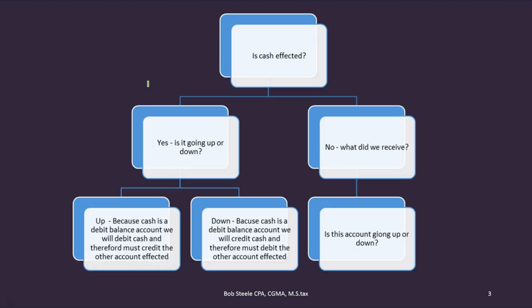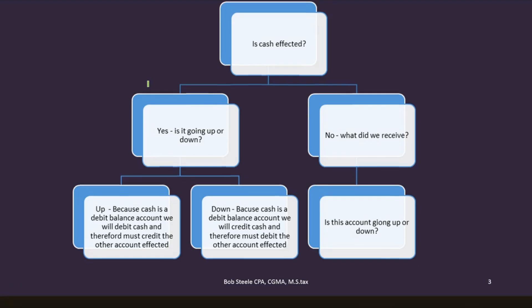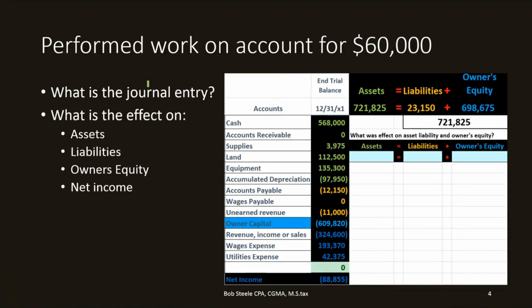If cash isn't affected, then we want to say what did we receive most times and go from there. So let's see what that means in terms of accounts receivable. First transaction: perform work on account for $60,000. That's what generally happens in a business — if we were a bookkeeper or something, we would perform work on account. We did the work but have not yet received the cash. The form related to that would generally be an invoice — we'd send out an invoice, which would be the bill to the recipient.